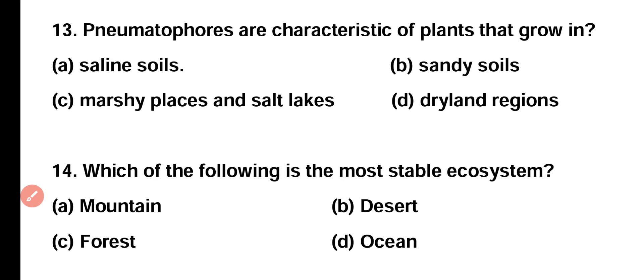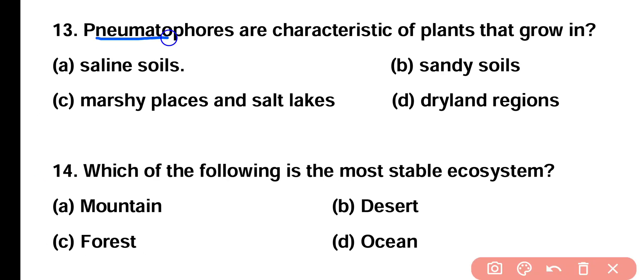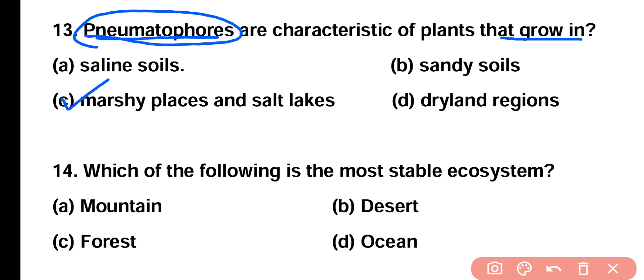Question number thirteen: pneumatophores are the characteristic of plants that grow in saline soil, sandy soils, marshy places and salt lakes, or dry land regions? Correct answer is option C. Pneumatophores are aerial roots present in mangrove forests in marshy areas and salt lakes, and they help in absorption of moisture.